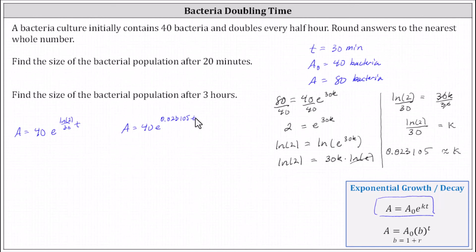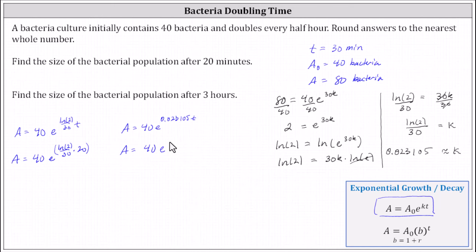To answer the first question — what is the size of the bacterial population after 20 minutes? — we need to find a(20), substituting 20 for t. This gives us a equals 40 times e raised to the power of ln(2)/30 times 20 as the exponent. We'll also show the equation with the approximate value of k: a equals 40 times e raised to the power of 0.023105 times 20.